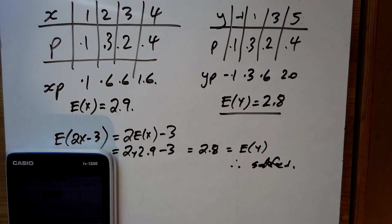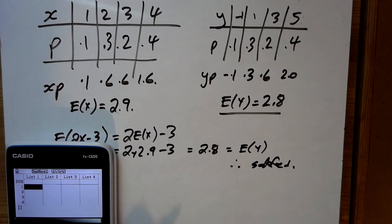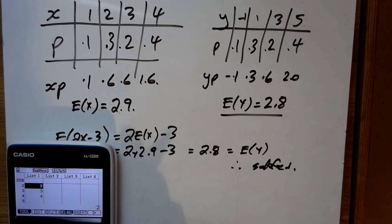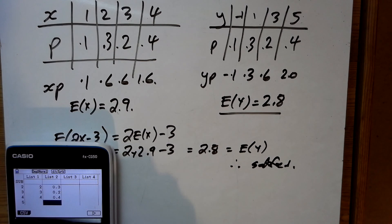Again, as it's the first question, I'll show you shortcuts on the calculator. Why didn't we just put 1, 2, 3, 4 down here in my x columns and then I had 0.1, 0.3, 0.2 and 0.4 in my probabilities.